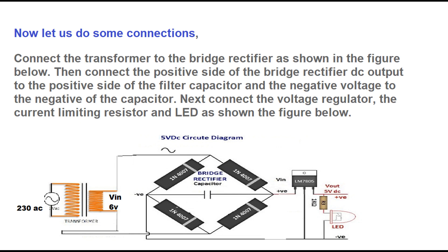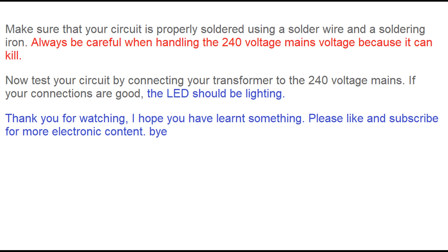Make sure that your circuit is properly soldered using solder wire and a soldering iron. Always be careful when handling the 240 volts mains voltage because it can kill. Now test your circuit by connecting your transformer to the 240 volts mains. If your connections are good, the LED should be lighting.